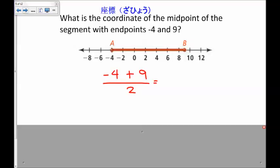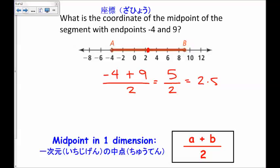Negative 4 plus 9 is 5 divided by 2. And 5 divided by 2 is 2.5. Or, right about here, is the midpoint. Now, here is a formula for the midpoint in one dimension, a plus b over 2.